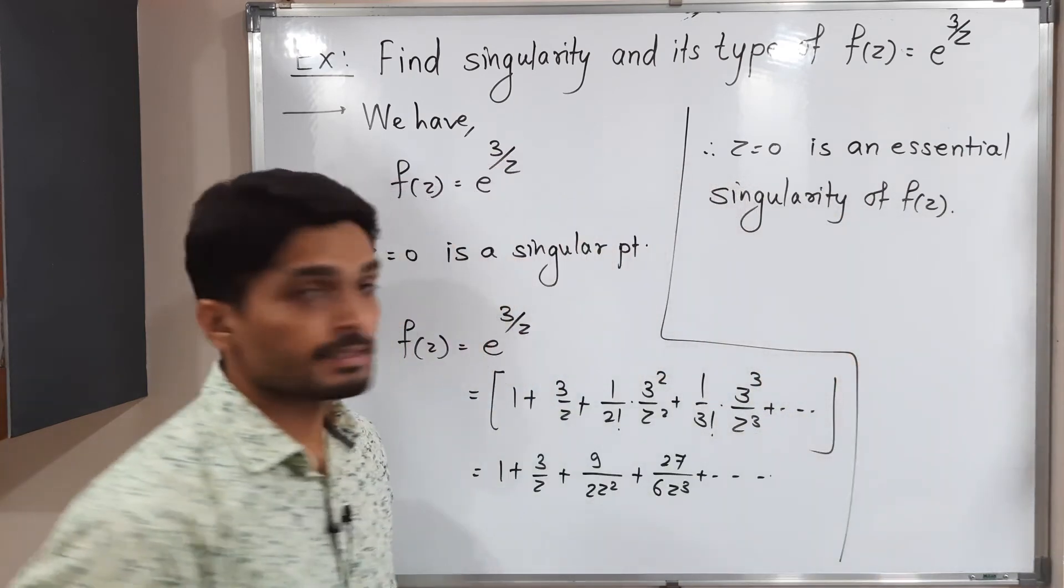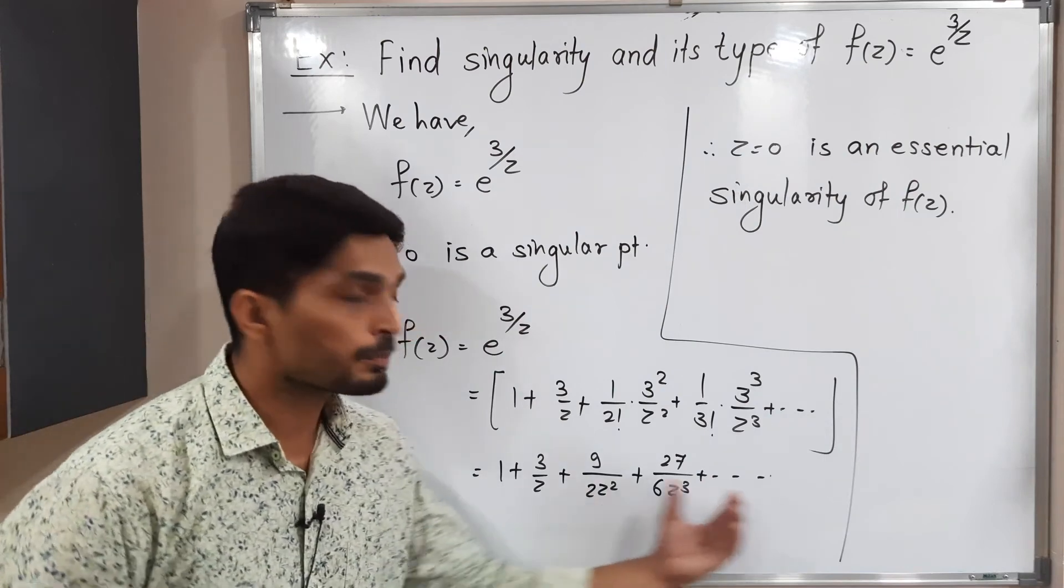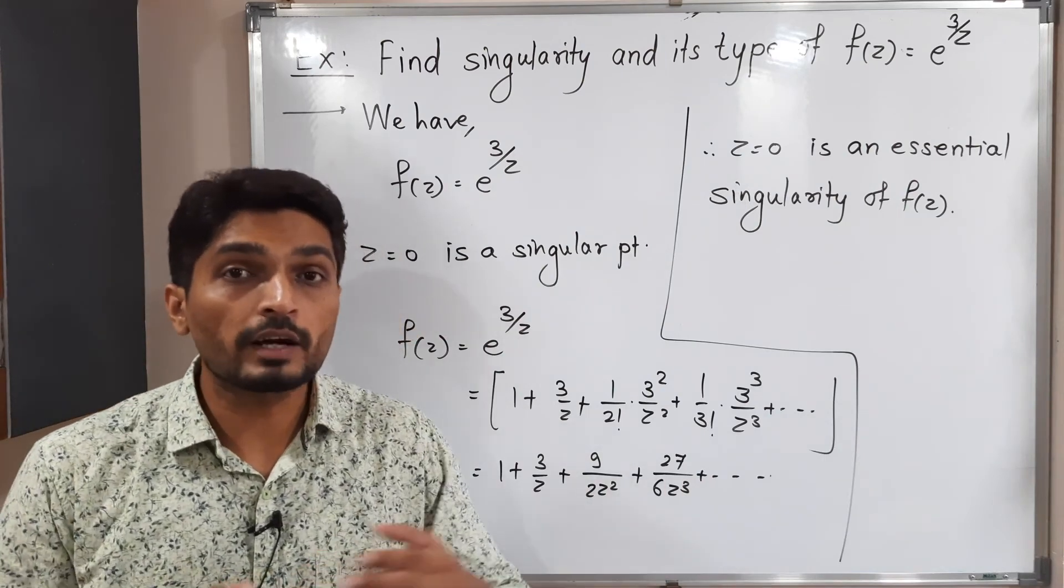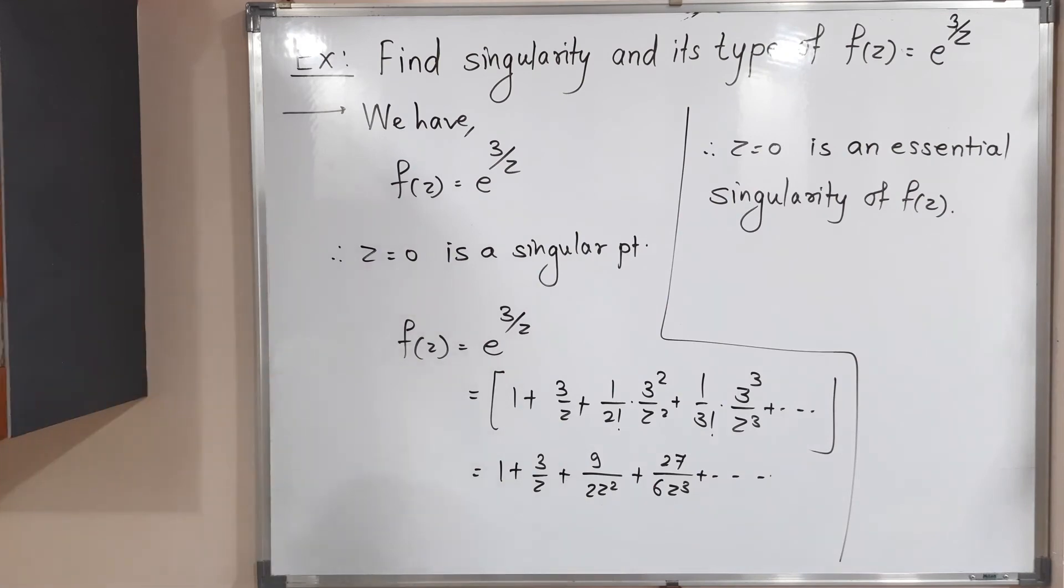We call it an essential singularity since its principal part has infinitely many non-zero terms. The example is over. Make a screenshot of it. Thank you, bye-bye.